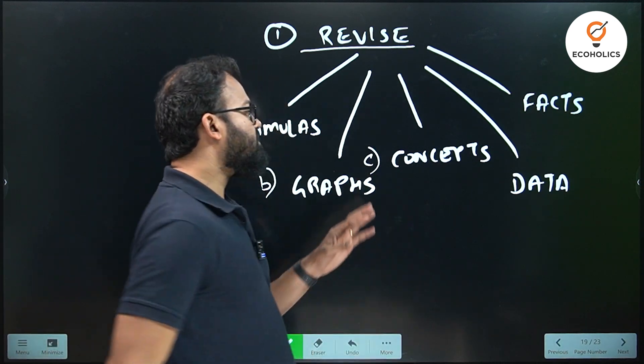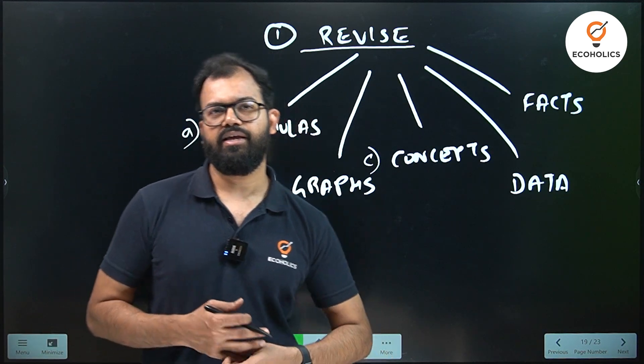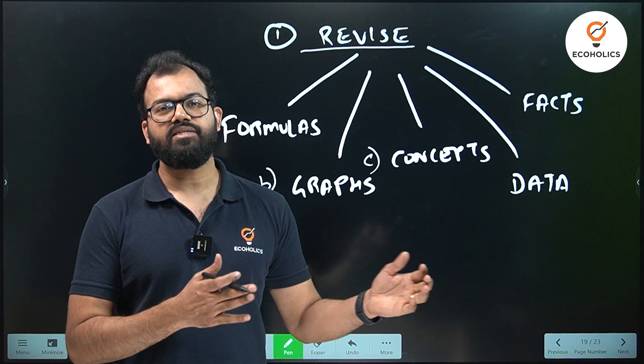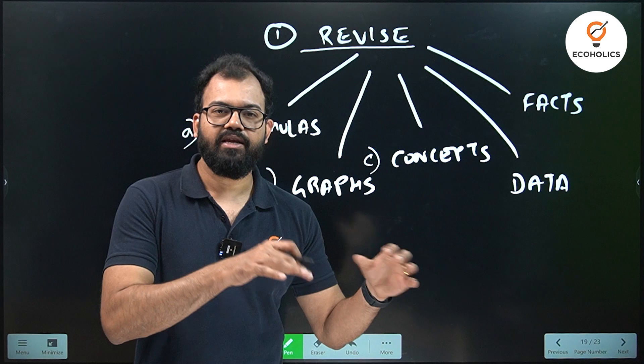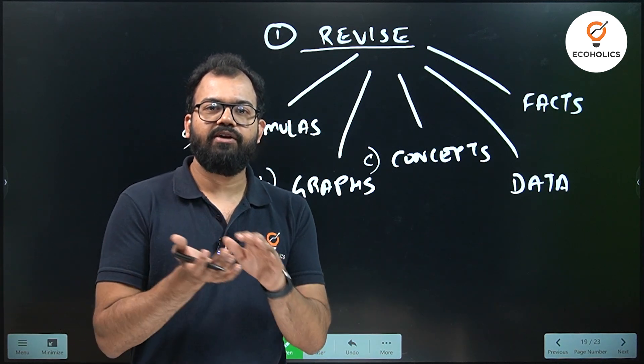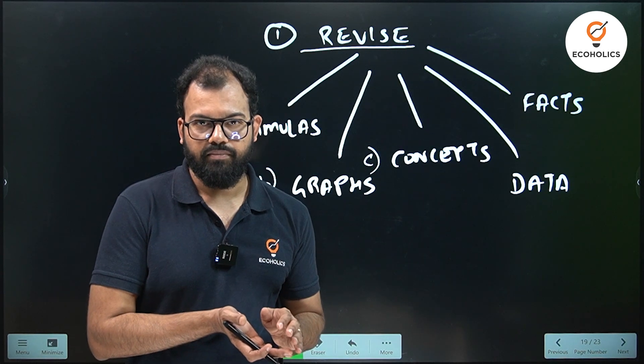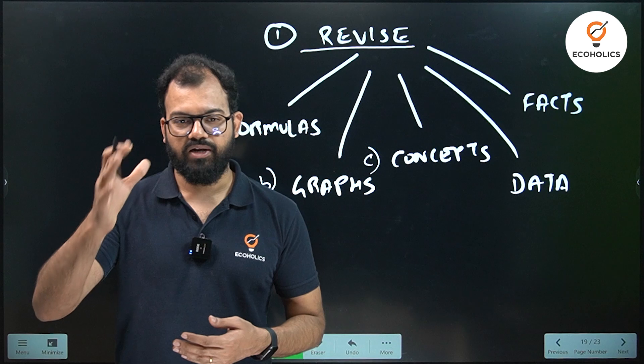Point C is concepts. Concepts generally we forget. Like for example, concept of classical versus Keynesian. Classical failed, Keynesian came. Then Keynesianism stagnated in the 1970s, so Milton Friedman and monetarism came. Here are the concepts which you need to have conceptual clarity.